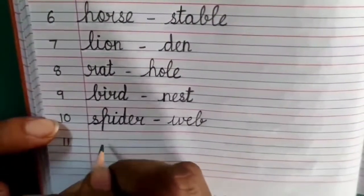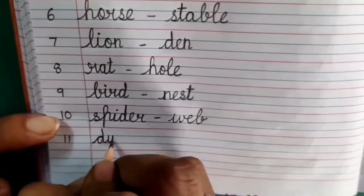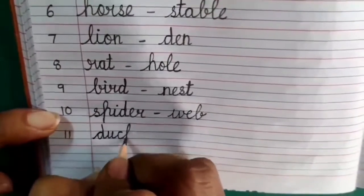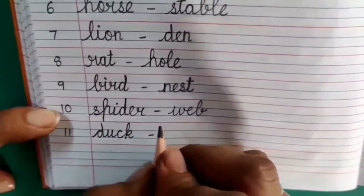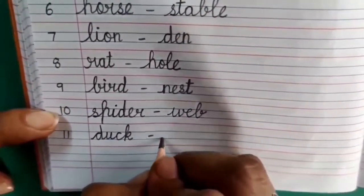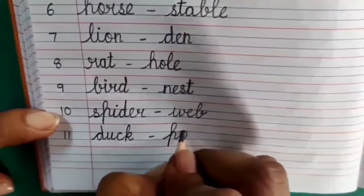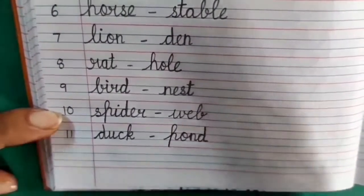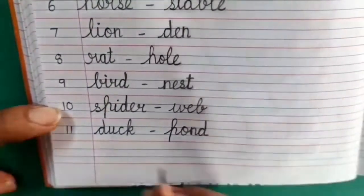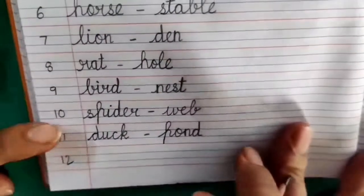Number 11: D-U-C-K Duck dash P-O-N-D Pond. Duck Pond.